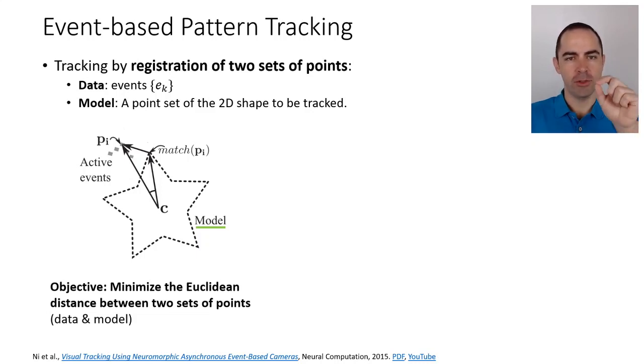Actually, these points are the points along the boundary or contour of the object to track. So in this case we have the events—one of the point sets, represented with these dots—and the other set is a discretization of this star. The star is the underlying continuous geometric model of the object to track. Because we are registering two point sets, the goal is to minimize the Euclidean distance between the two point sets—the data and the model. We want the model to stay on top of the data.